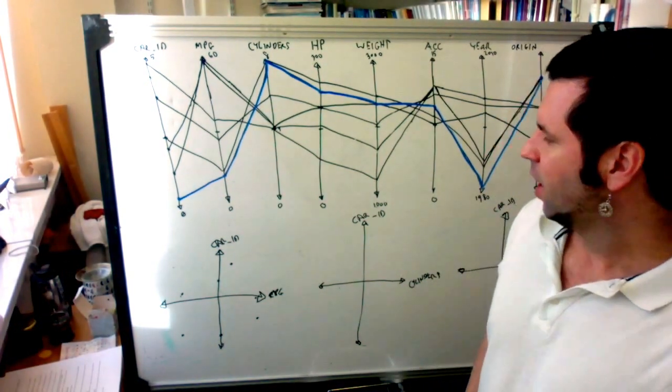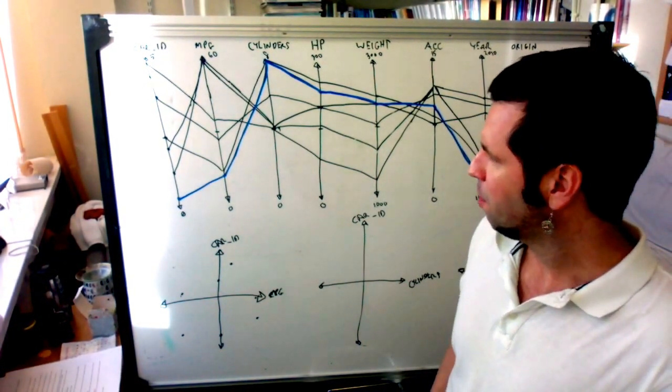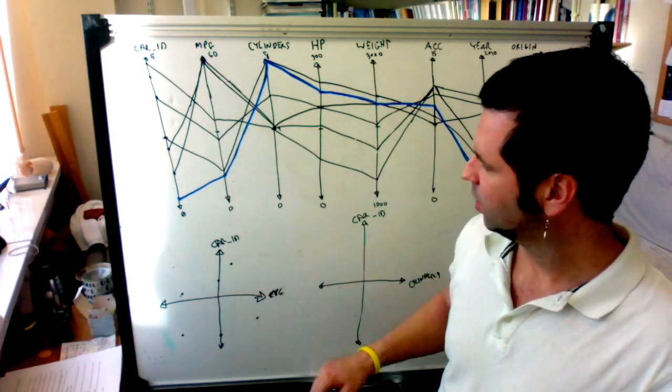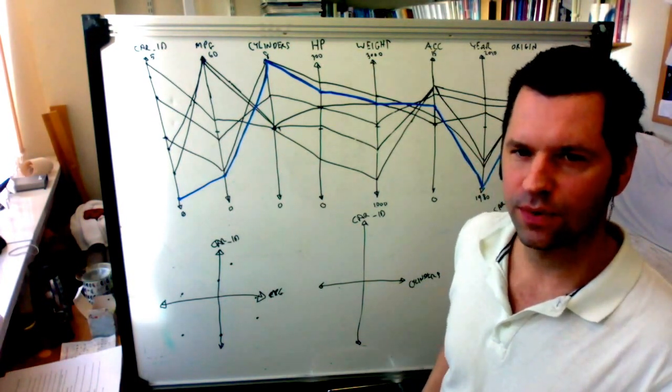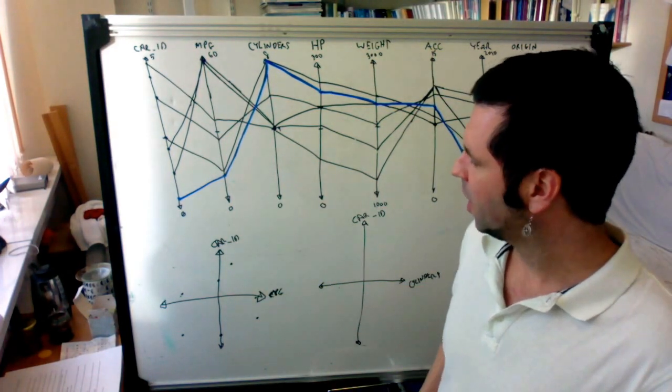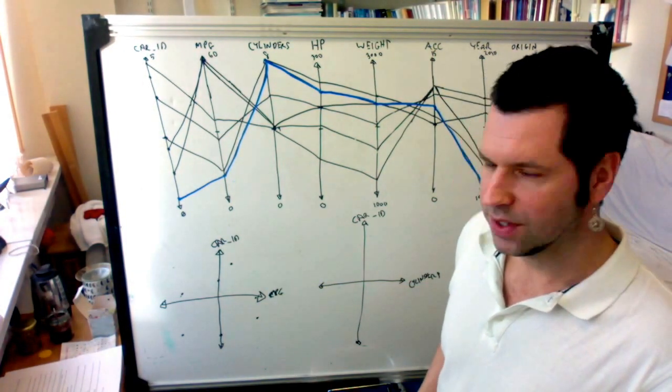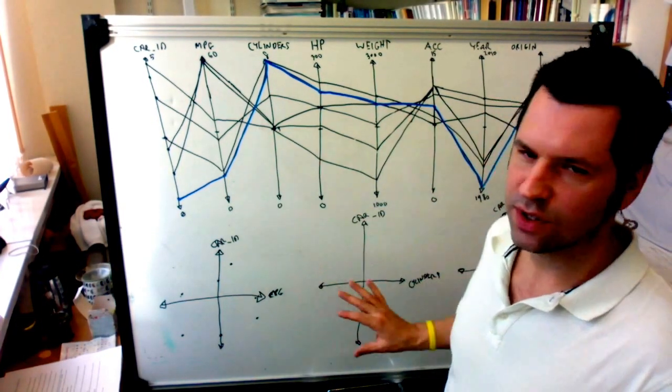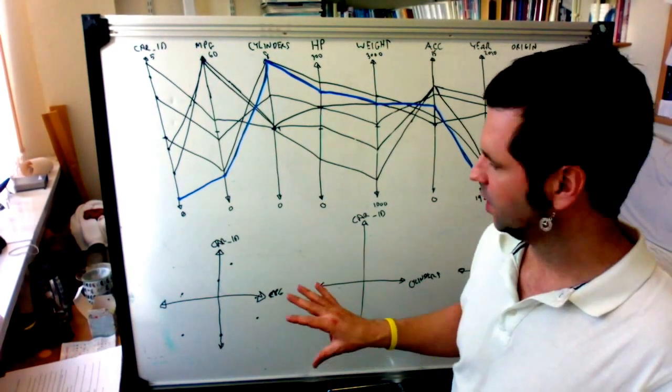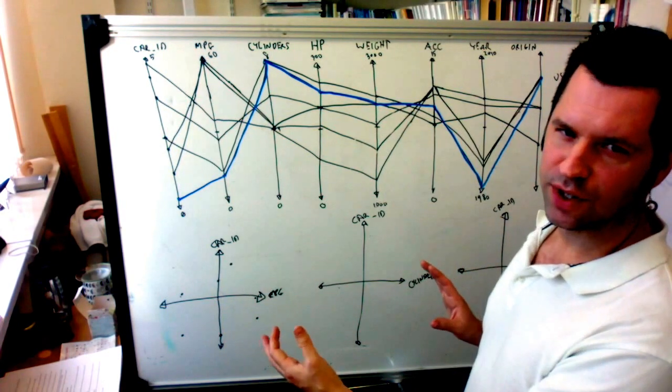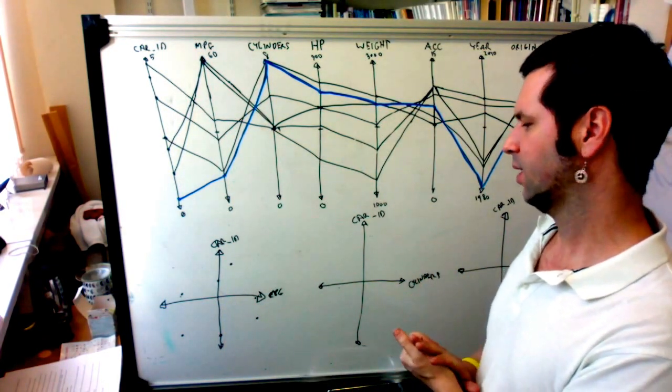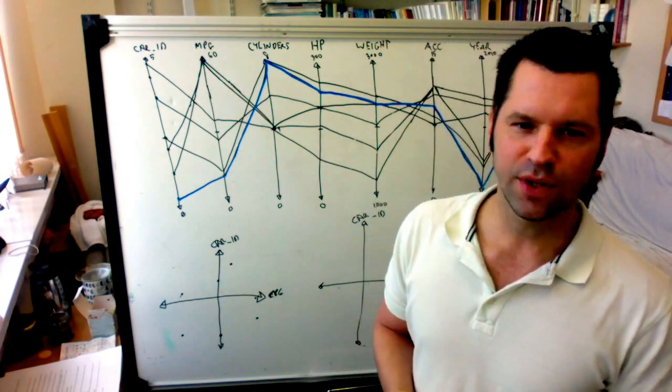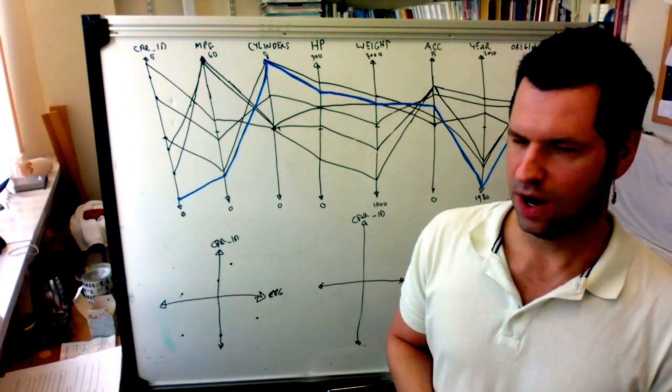Now, advantages and disadvantages of parallel coordinates versus scatter plots. So the advantages of the scatter plot or the Cartesian coordinate is that it's intuitive. So people see this and they understand it right away. A disadvantage is that it's not very scalable. So to represent this same information with a scatter plot matrix is cumbersome. And as the number of dimensions increases, it becomes more and more difficult and it doesn't scale very easily.